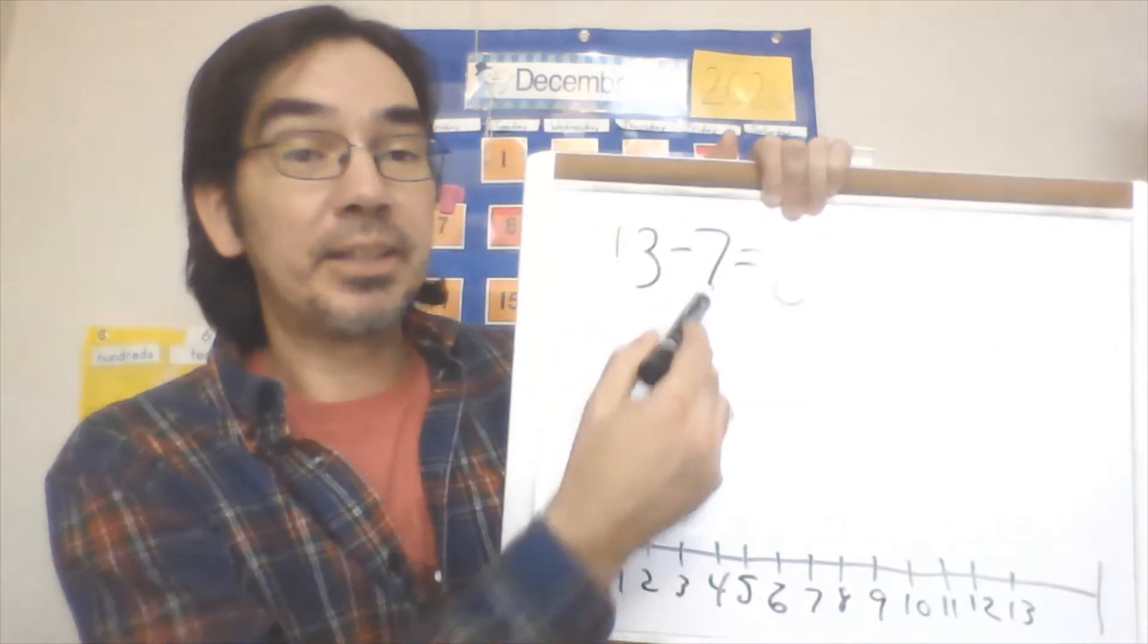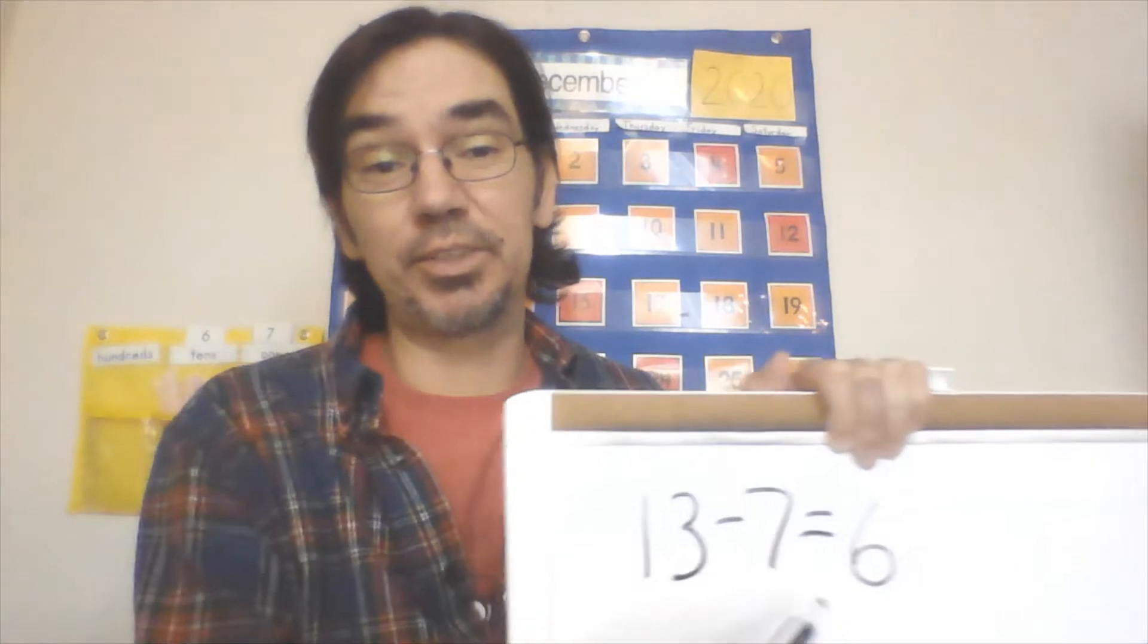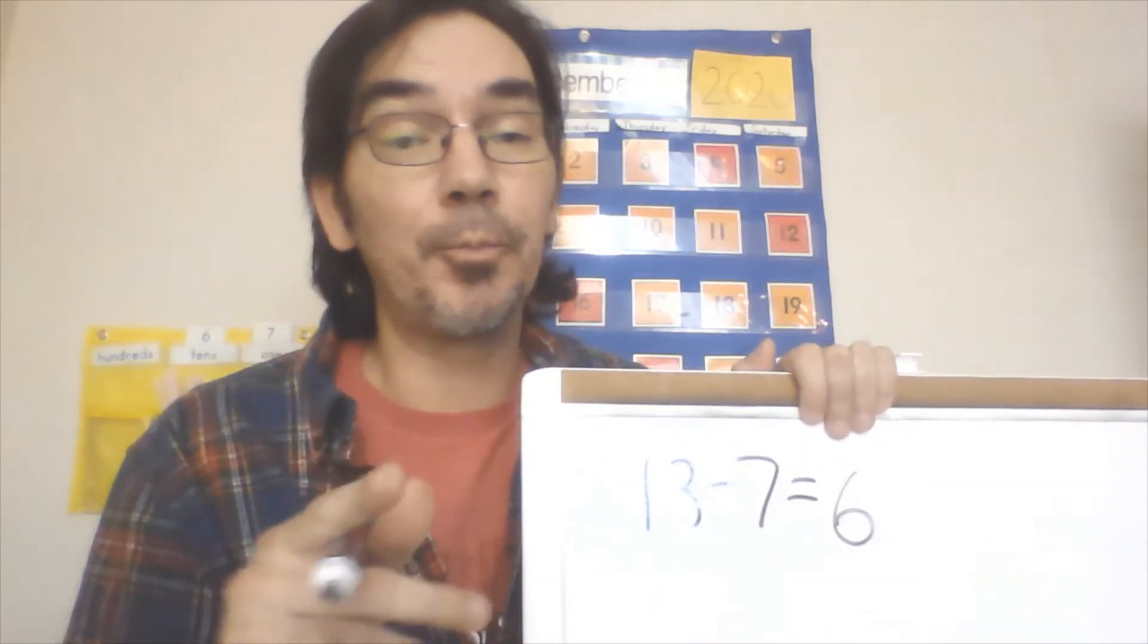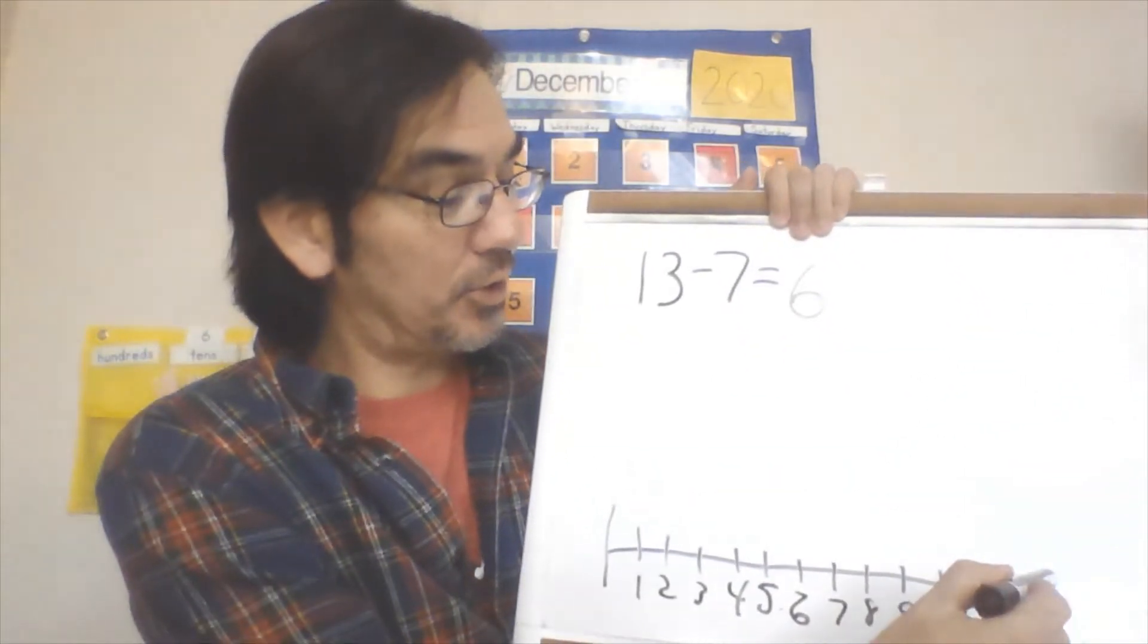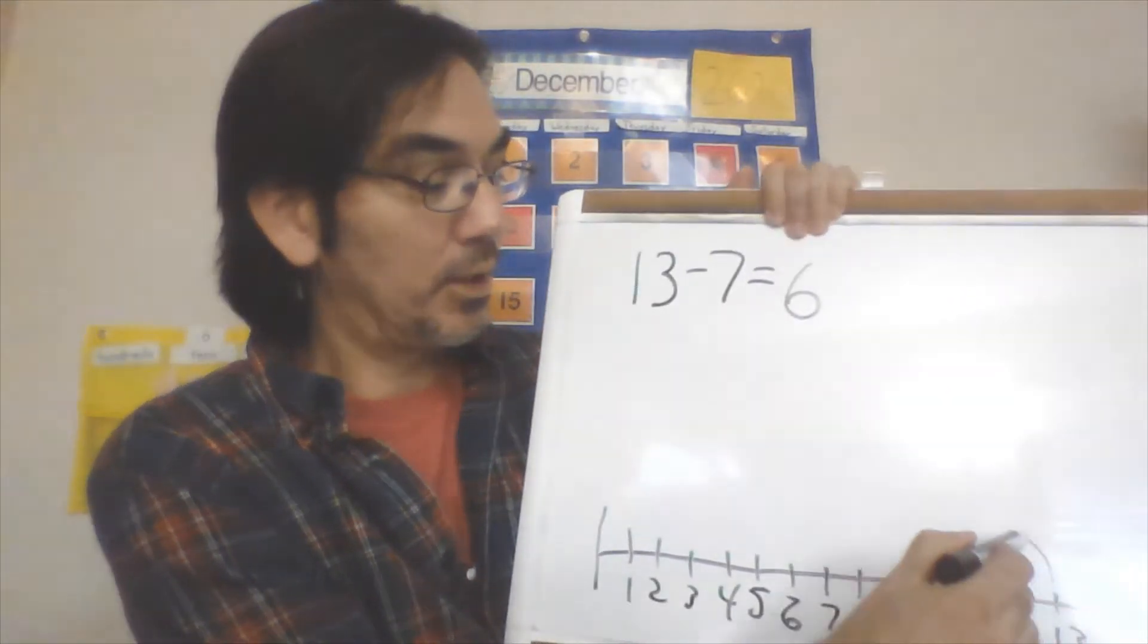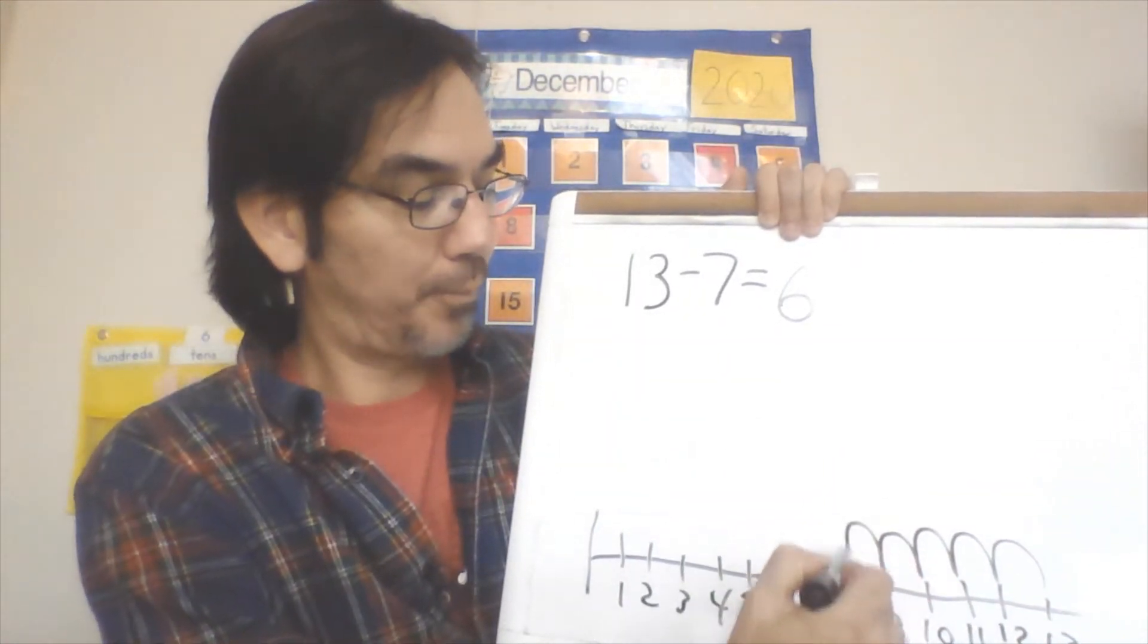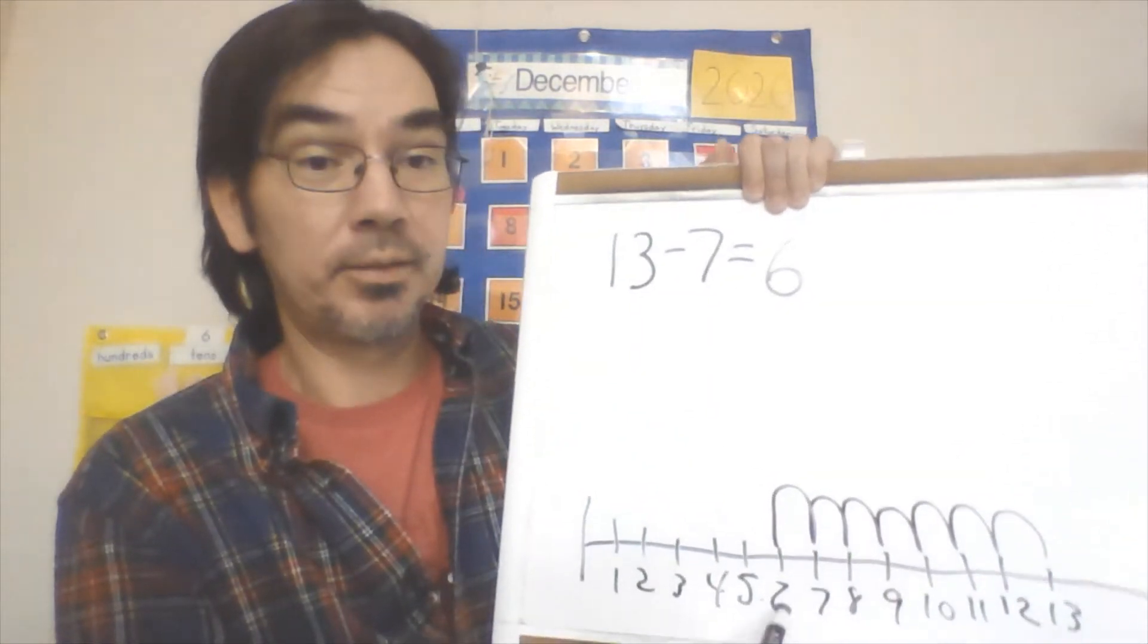I can stop there because the biggest number I'm going to have is 13. Let's jump back seven—we're going to jump backwards seven because we're taking away seven. We start at 13, let's go back seven times: one, two, three, four, five, six, seven. We ended up on six. Look at that, very nice.